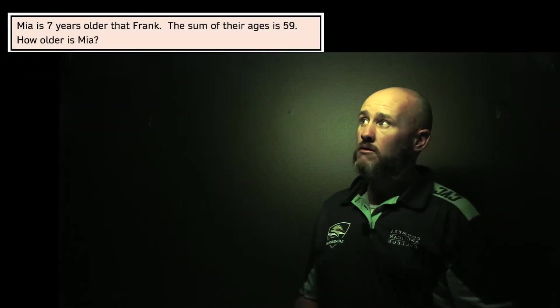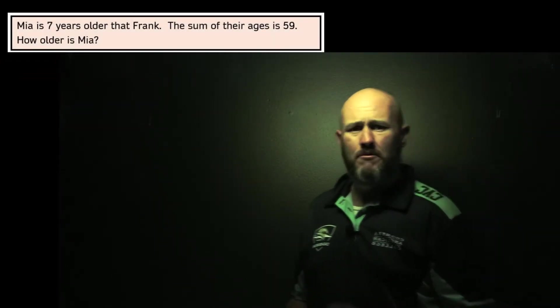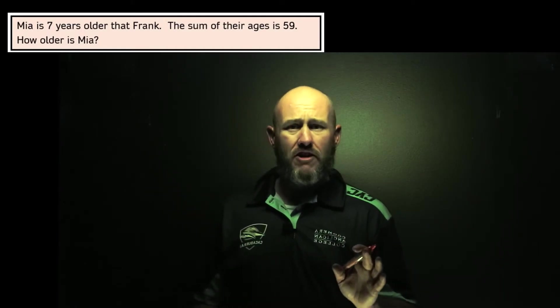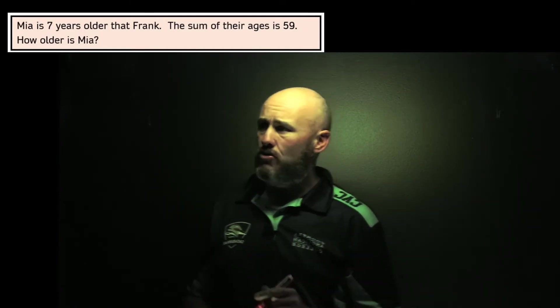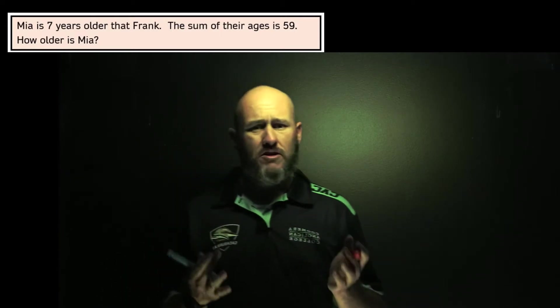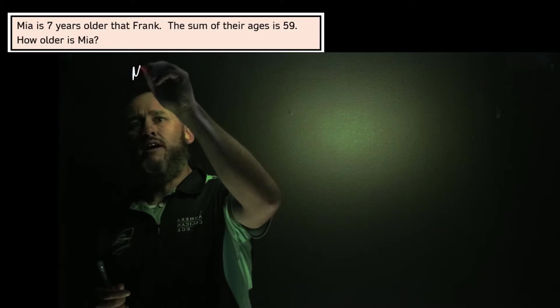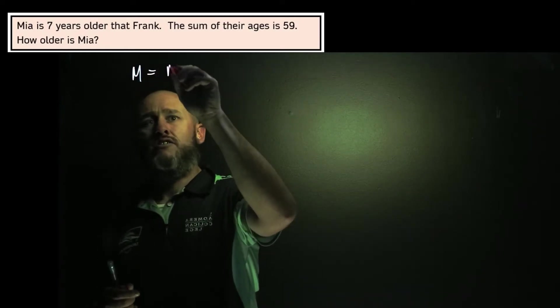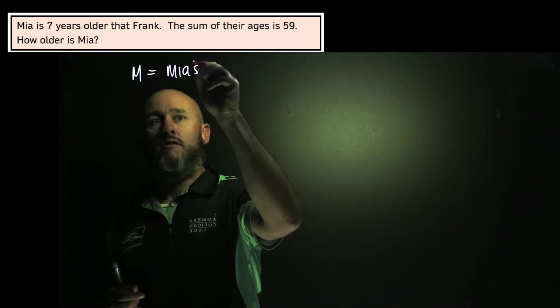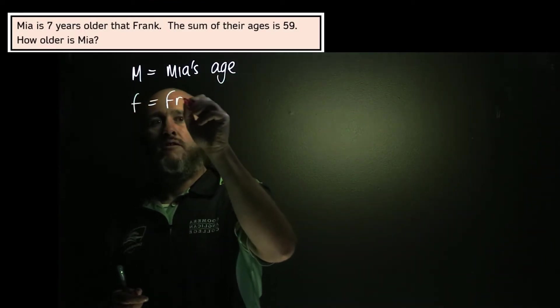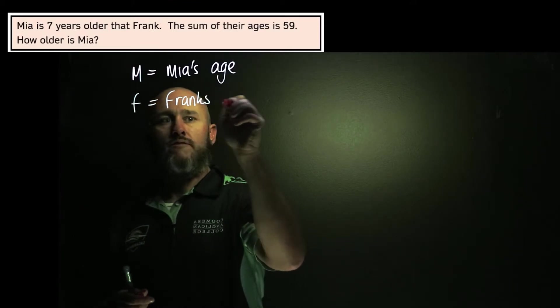So here's our first example. Mia is seven years older than Frank. The sum of their ages is 59. So let's try and set this up. First, we're going to have to define some variables. What I'm going to set up is that Mia's age is M, and Frank's age is F.